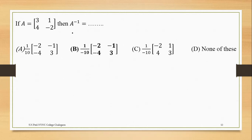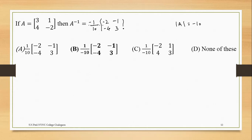For the second example, first find the determinant to get the answer easily. The determinant of this matrix is minus 6 minus 4 equals minus 10. That gives 1 upon minus 10. Now swap the diagonal elements: write minus 2 and 3, and multiply off-diagonal by minus sign giving minus 1 and minus 4. So B is the correct answer.